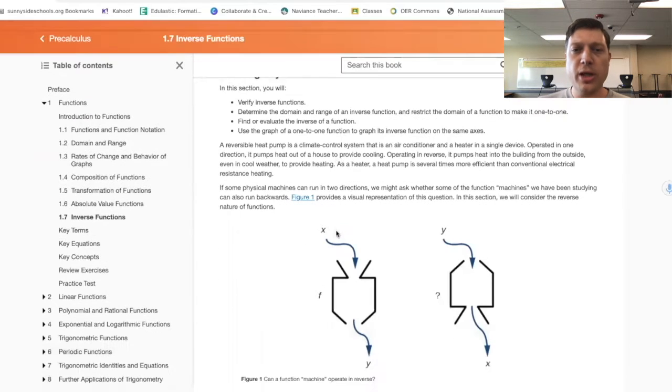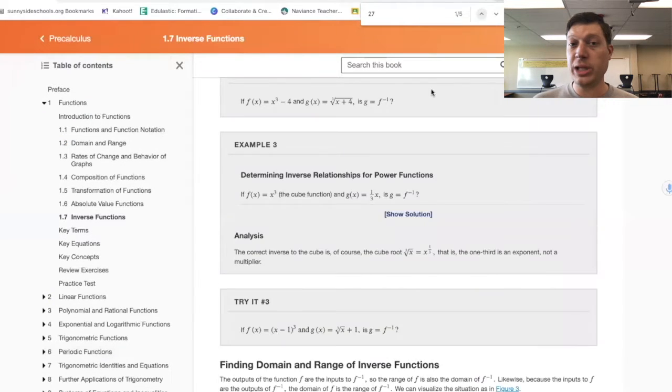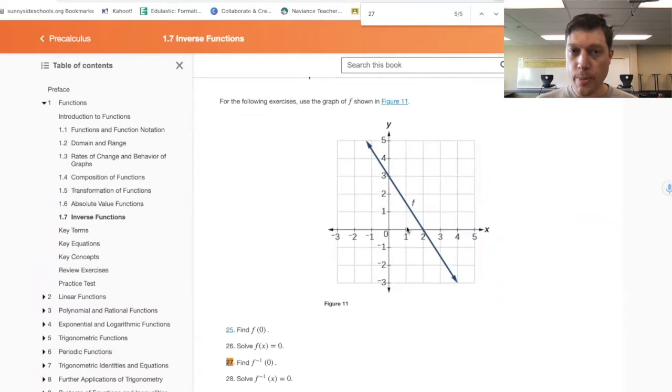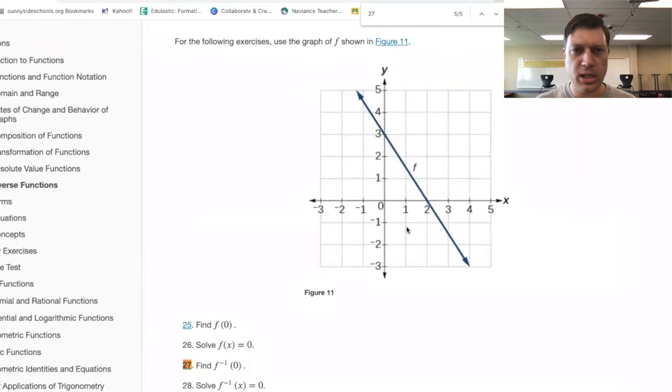First of all, when we talk about the inverse of a function, we're looking for the relationship between x and y and also y and x, like they swap. When we're given a graph, which we are in 25 through 28, first of all, the notation that's new or newer here is the use of the minus one. Minus one indicates inverse.